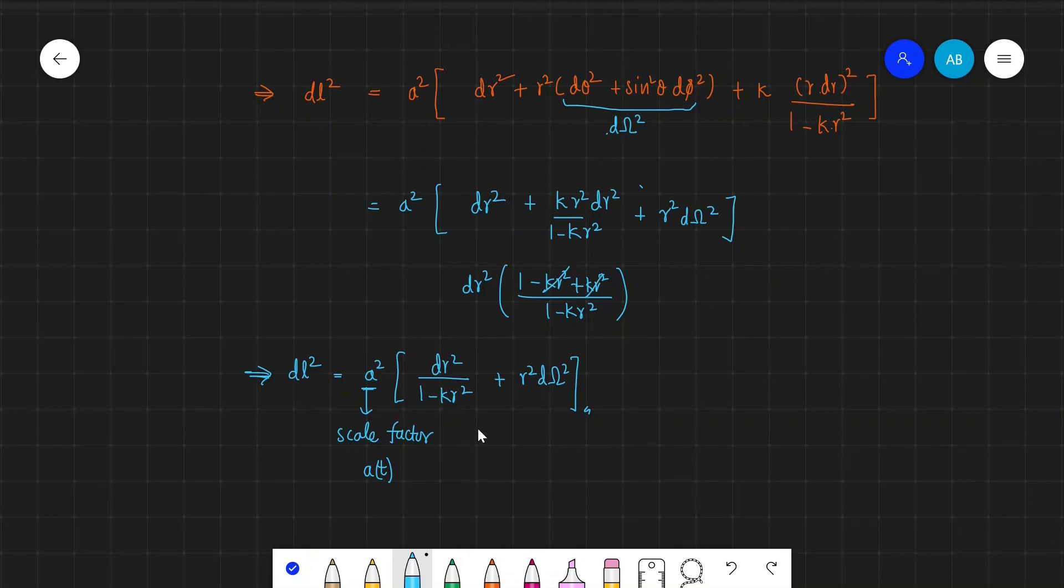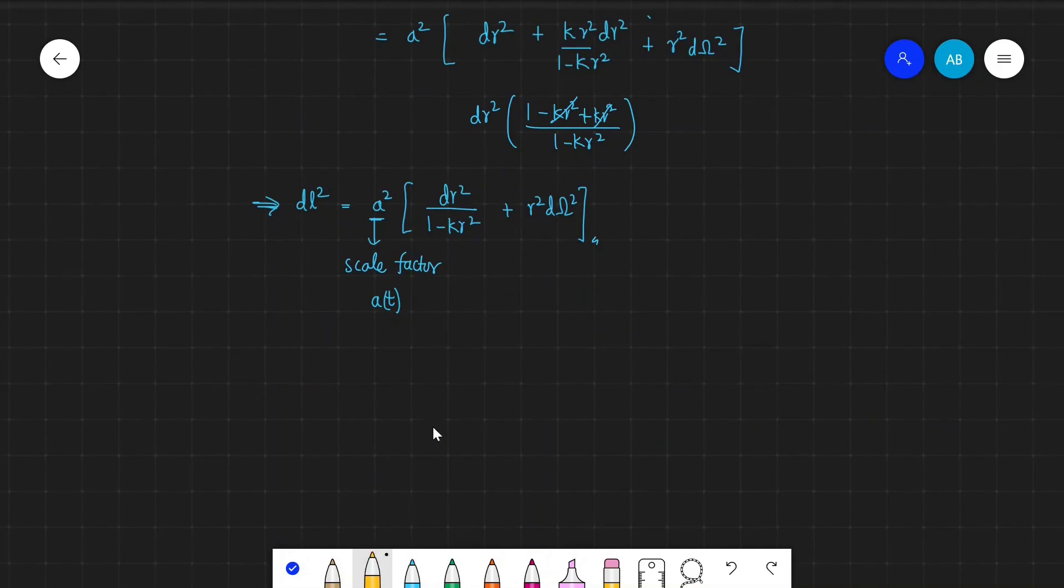We know that the flat spacetime is given like dl² equals dt² minus dx₁x₂x₃ squared, and instead of this part which is a static Euclidean space...